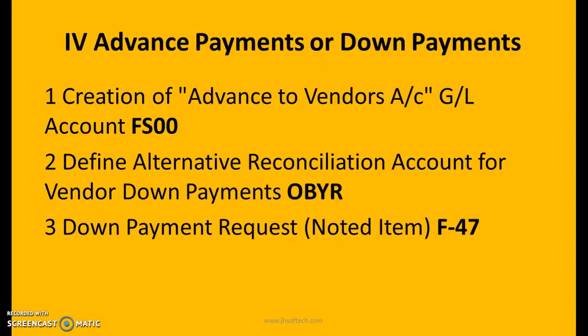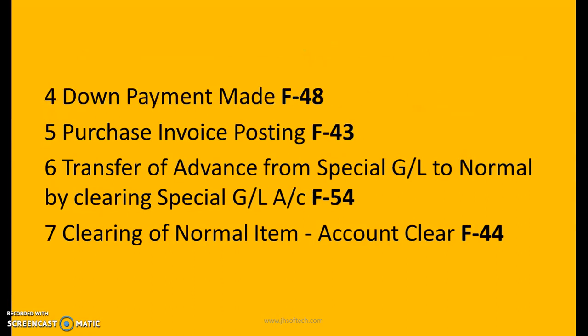Advance payments and down payments: creation of advance or vendor account GL account is done in FS00. Define alternative reconciliation account for vendor down payments — OBYR. Down payment request noted item — F-47; down payment made — F-48; purchase invoice postings — F-43; transfer of advance from special GL to normal by clearing special GL account — F-54.